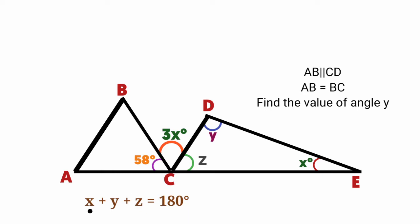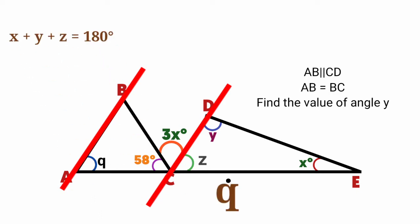If we look, there is no relation we can use to find angle X immediately, but we can find the value of Z. Since line AB is parallel to line CD, this angle here must be equal to this angle because they are corresponding angles. We can label this angle Q and write Q is equal to Z.